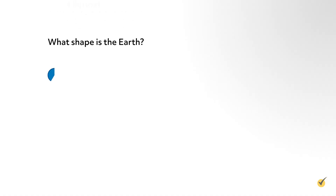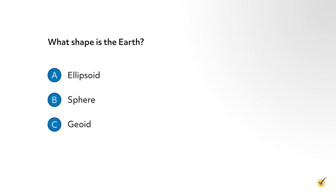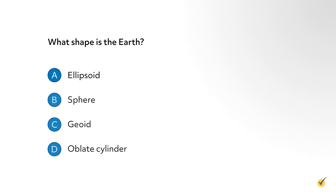Number one: what shape is the Earth? A, ellipsoid. B, sphere. C, geoid. D, oblate cylinder. The correct answer is A, ellipsoid. The Earth is not a sphere because of the equatorial bulge. The geoid is a hypothetical shape of the Earth based on sea level.